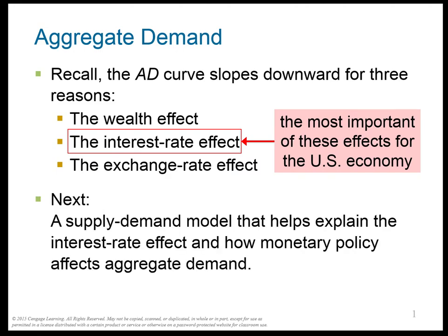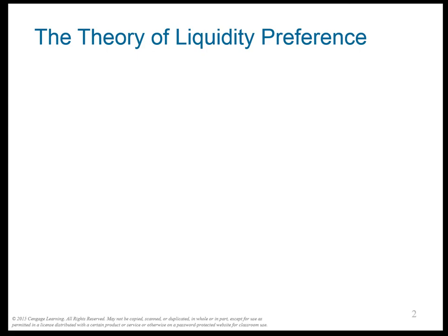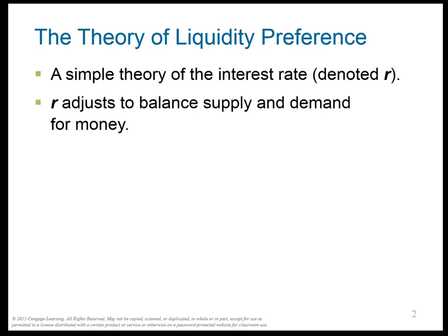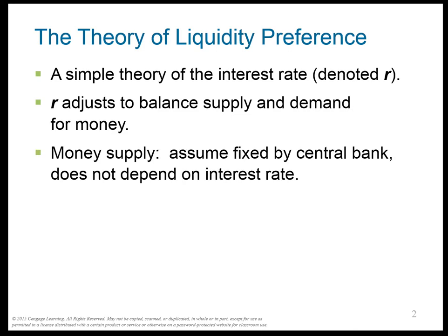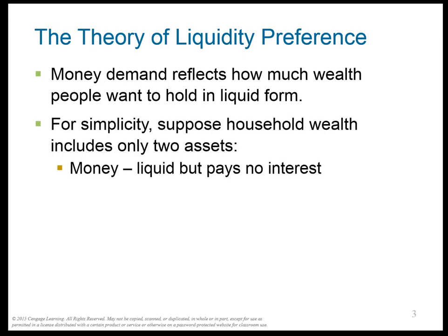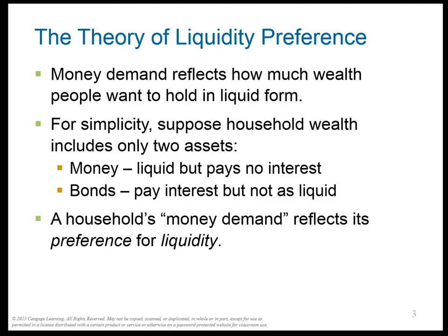Here's a supply and demand model that helps us remember. But first, let's talk about what liquidity preference means. It gives us the theory that leads us to how to find the real interest rate R. In any supply and demand model, R adjusts to balance supply and demand. Money supply comes from the central bank — the Fed — and money demand reflects how much wealth people want to hold. You can suppose household wealth includes two assets: money, which is liquid but pays no interest, and bonds, which pay interest but are not as liquid. The household can split its wealth between either of those.